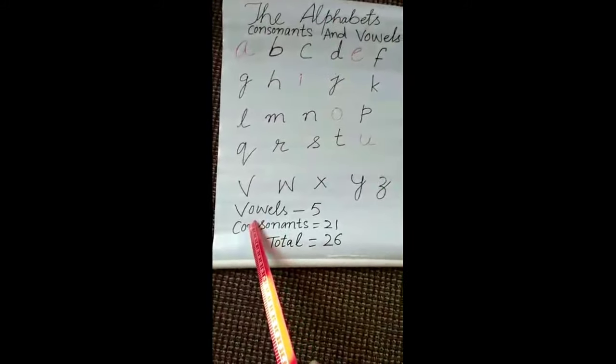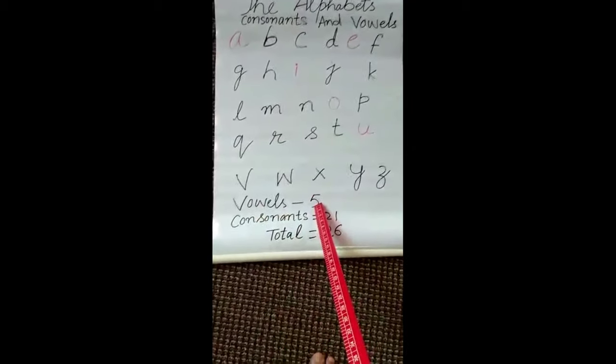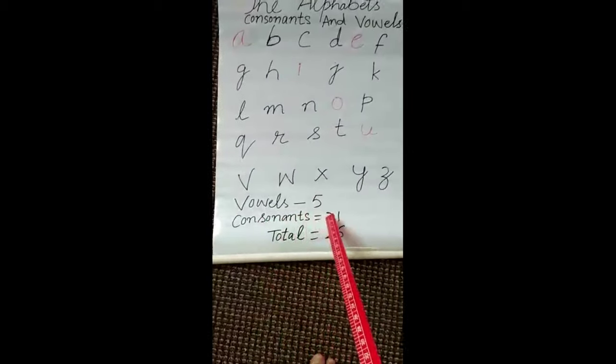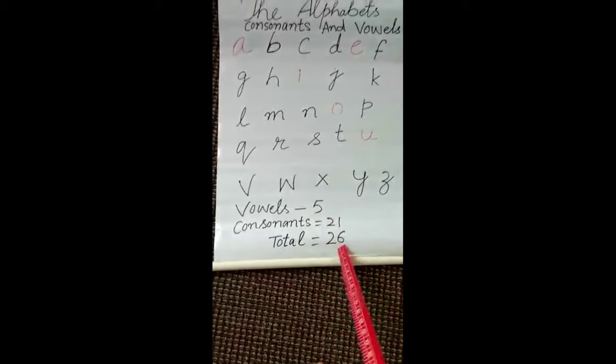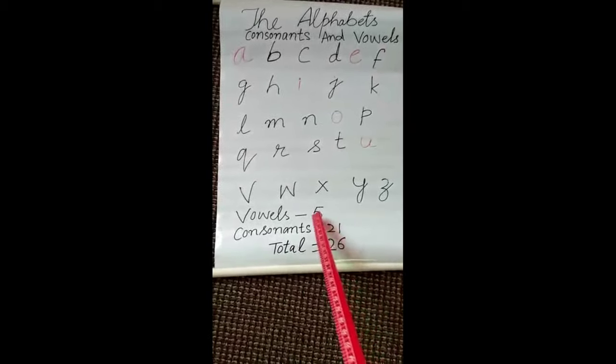So vowels are five in the English alphabet, and the total letters in the alphabet are 26. 21 plus 5 comes out to be 26.